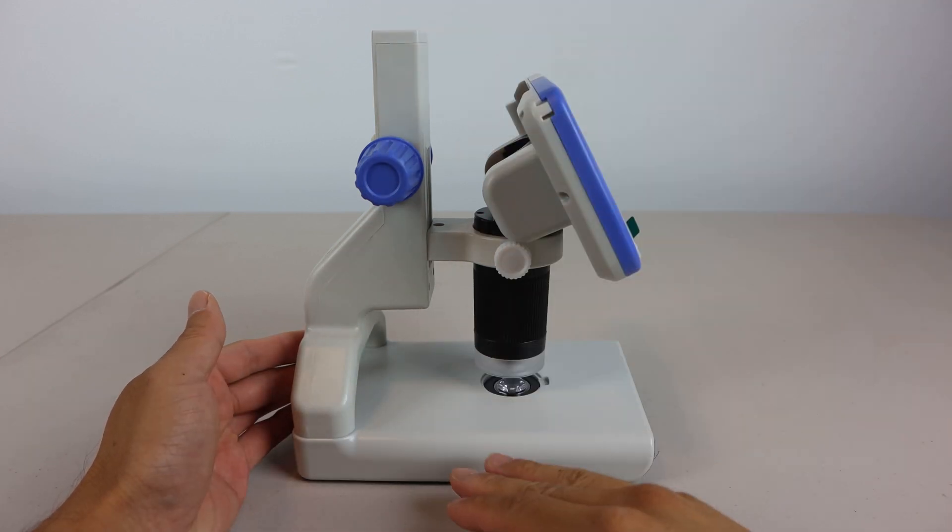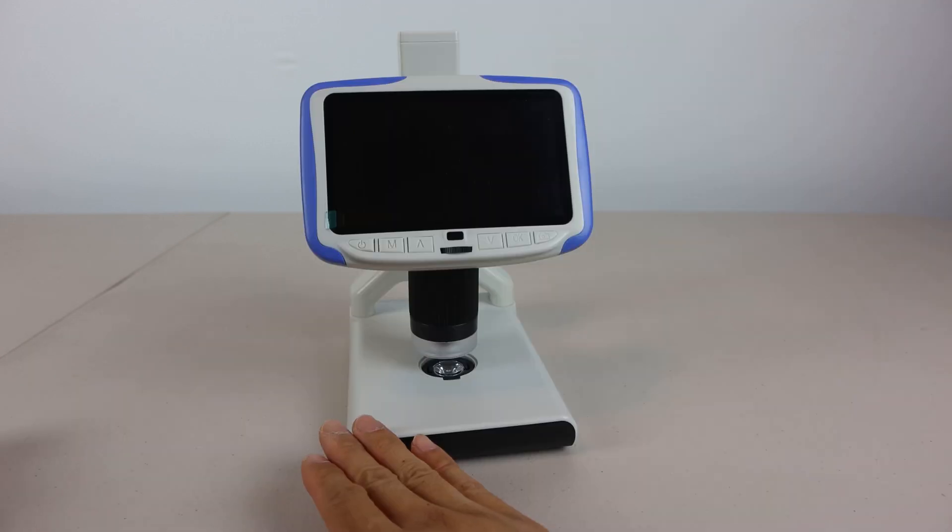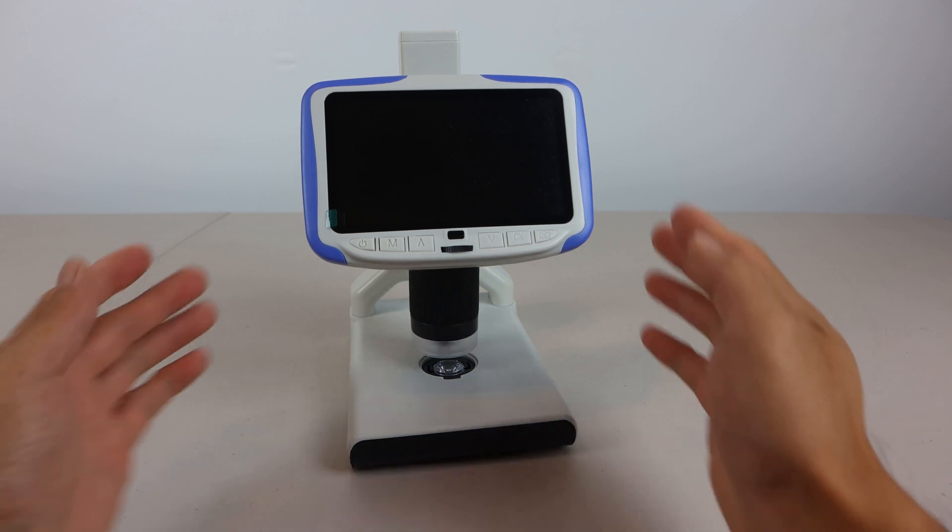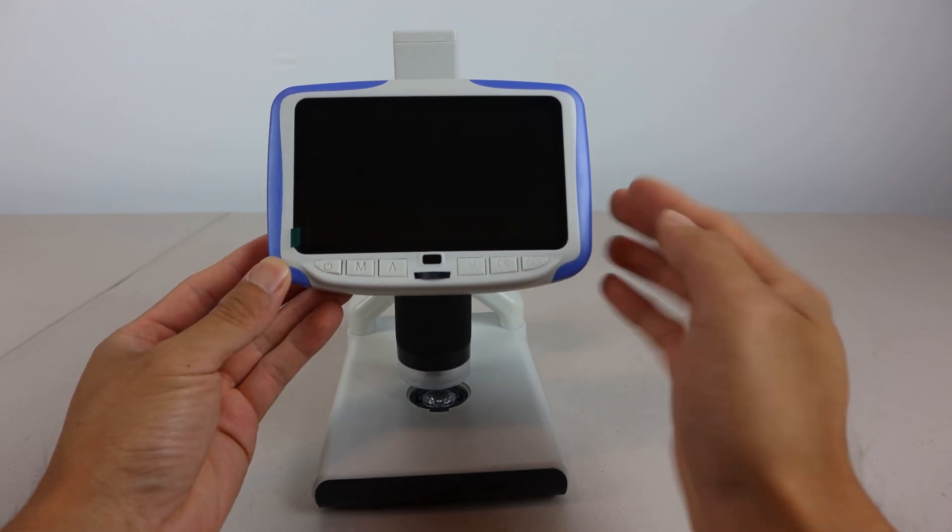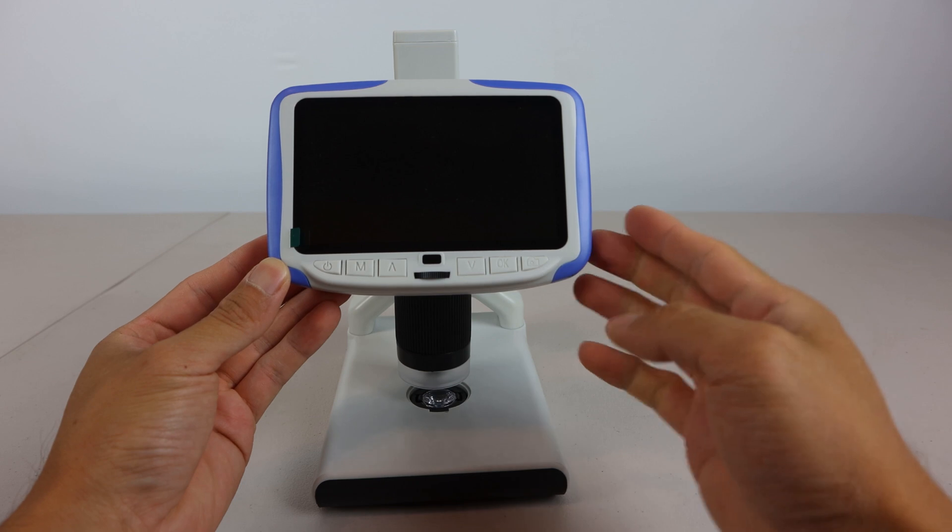This is the microscope. It is 8.5 inches tall, 7 inches long, and 4.5 inches wide. The construction is mostly lightweight plastic, and it has a 5 inch diagonal LCD.